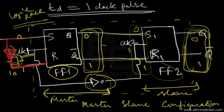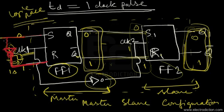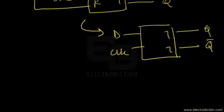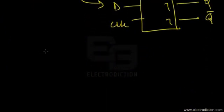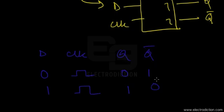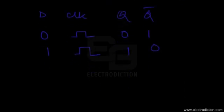This is how we obtain the master-slave D flip-flop. Moving on to the truth table of the D flip-flop: we have the D input, the clock input, and Q and Q bar outputs. When D is 0 under the presence of the clock signal, Q is set to 0 and Q bar to 1. When D is 1 under the presence of the clock, we have logic 1 at Q and 0 at Q bar.